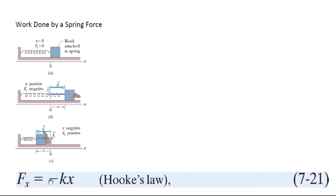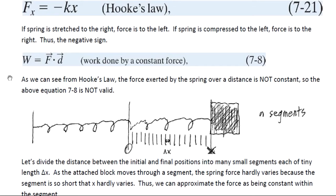That's what the negative sign in Hooke's Law means — the direction of the force is always opposite to the displacement. If the block goes to the left, the spring force is to the right, and vice versa. Previously, we defined the work done by a force as the product of force and distance, or the dot product of force and displacement if there is an angle between them.